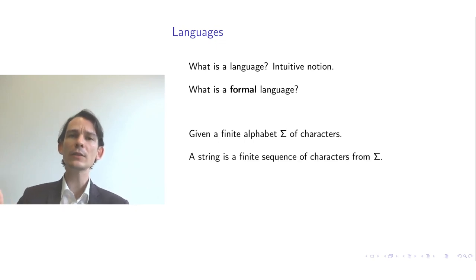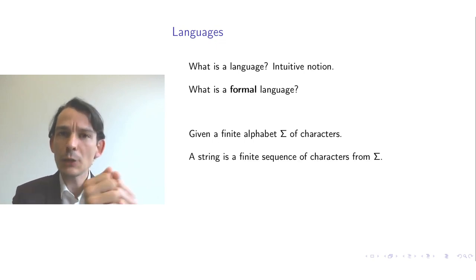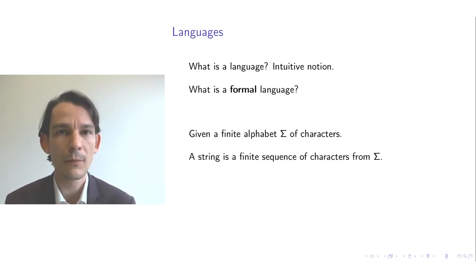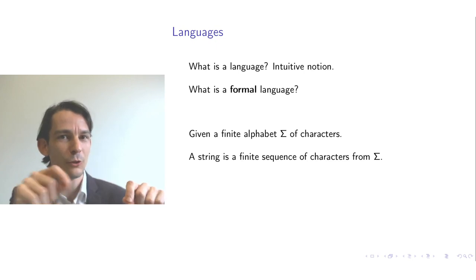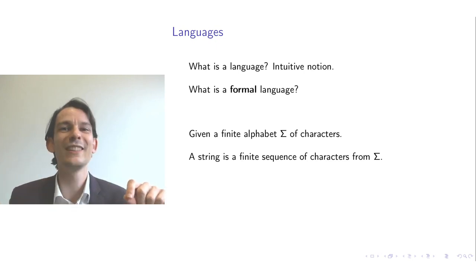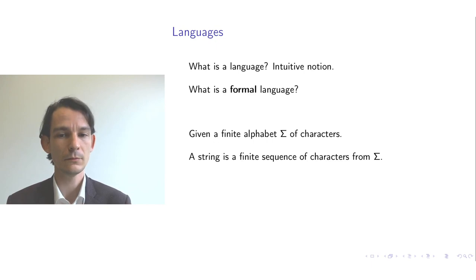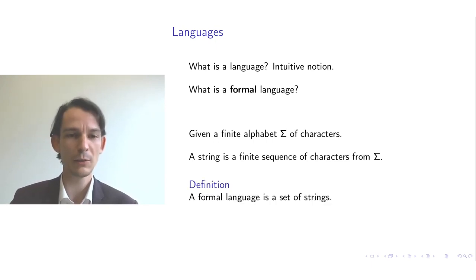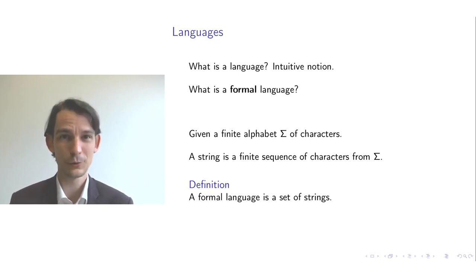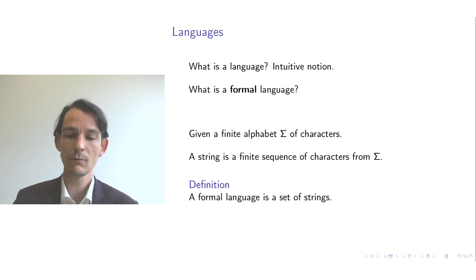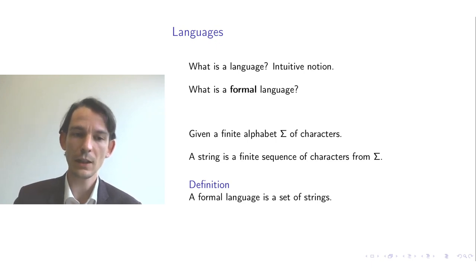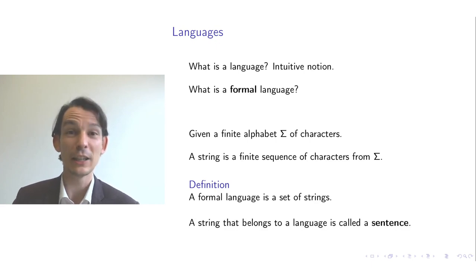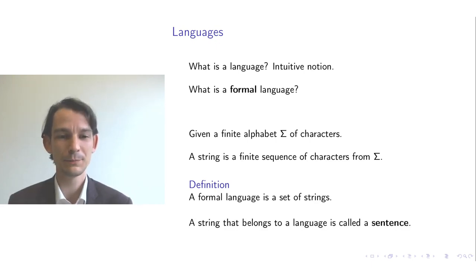If we have an alphabet, we can then form sequences of characters from that alphabet. These finite sequences of characters that you put in order, we call strings. If we have strings, then we can understand what a formal language is, because a formal language is a set of such strings. If a string is in a particular formal language, then we call that string a sentence of that formal language.